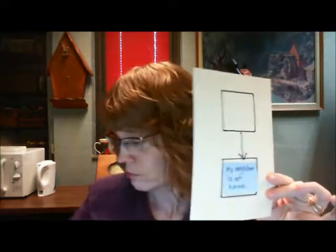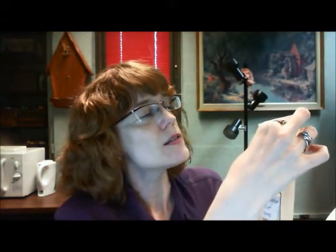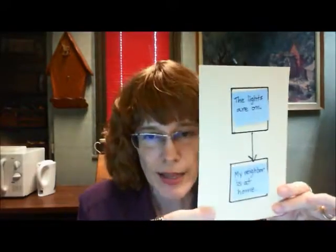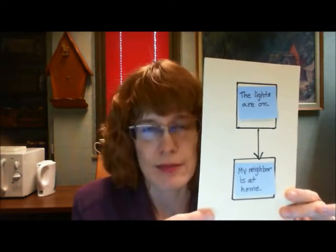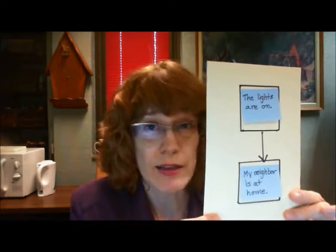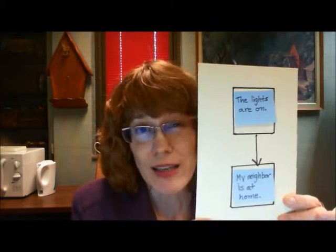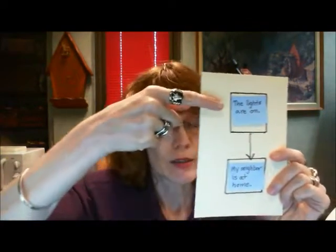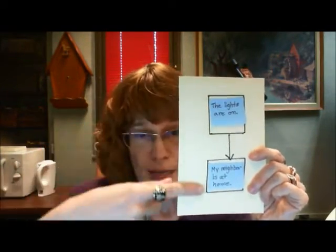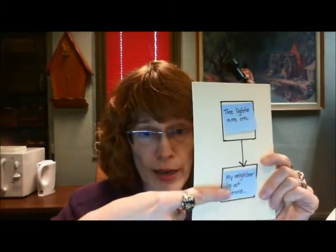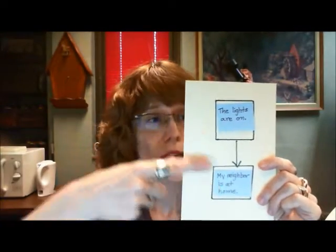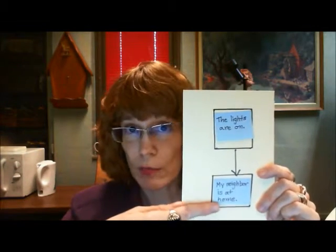Now, last time we used the following example. My neighbor is at home was the conclusion. The reason was the lights are on. So we can represent this, or rather express it in a number of different ways using just normal prose. I can say, for example, the lights are on. This means that my neighbors are at home. I could say, the lights are on, so my neighbors are at home. I could say, the lights are on, therefore my neighbor is at home.